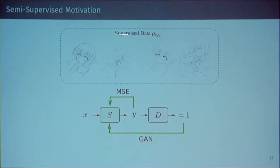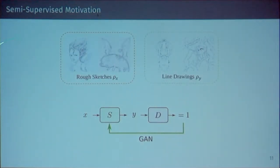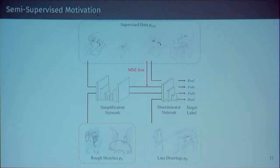Visually, for supervised data you have your input, the simplification model S, and the discriminator, and you backpropagate MSE and adversarial loss simultaneously — this is a directed acyclic graph. For the unsupervised case, you have non-corresponding rough sketches and line drawings, and you update in a GAN-type way. Overall, you first optimize the discriminator network using both supervised and unsupervised data, then update the simplification network using the rough sketches and supervised data.